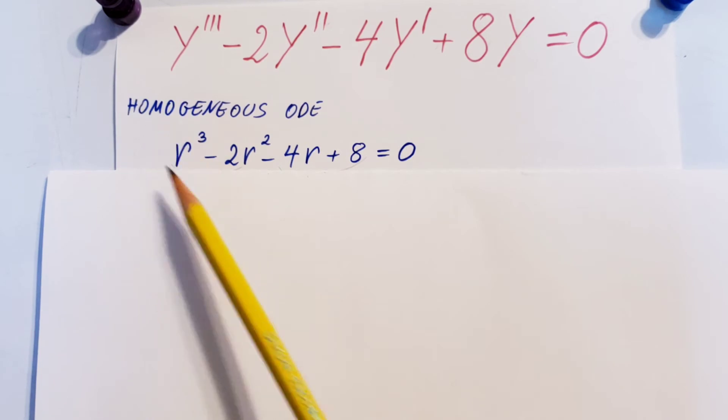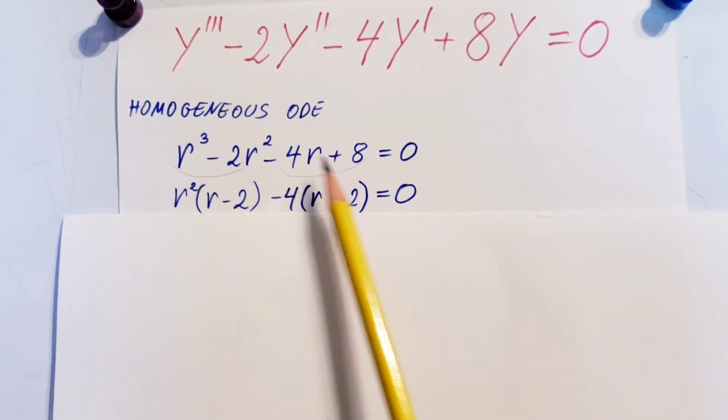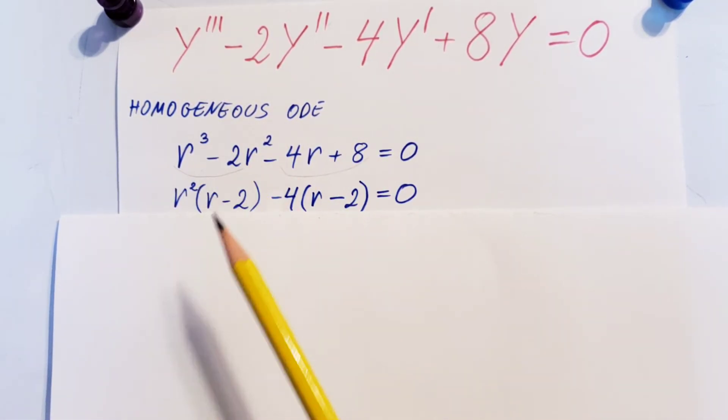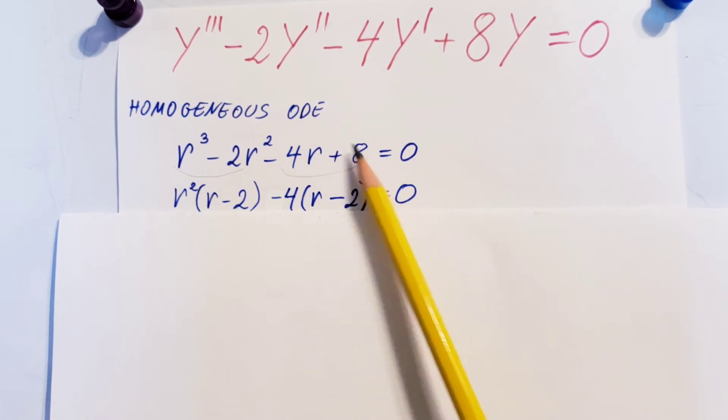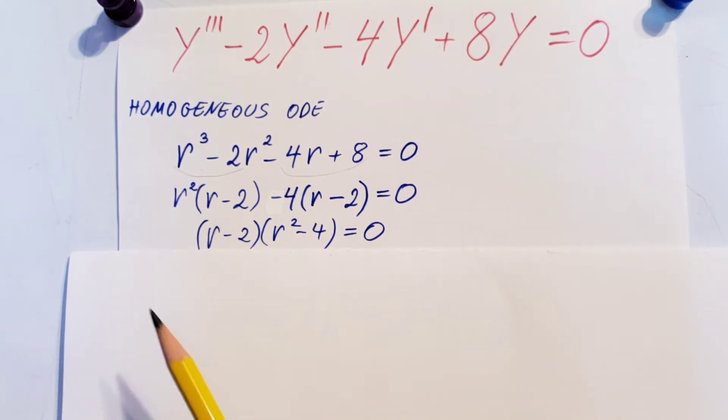Now from this we need to find our three roots. It'll help us if we realize that we can factor out from these two and these two right here, and that'll help us factor again, and we'll end up with r minus 2 times r squared minus 4 equals 0.